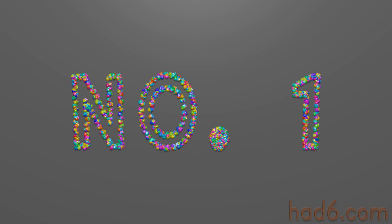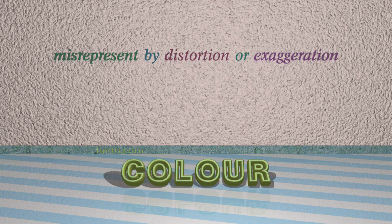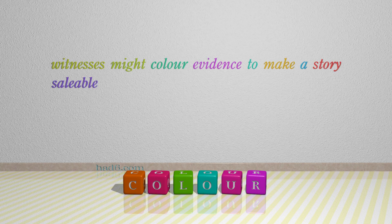Number 1: Color. Which means: misrepresent by distortion or exaggeration. For example: Witnesses might color evidence to make a story saleable.